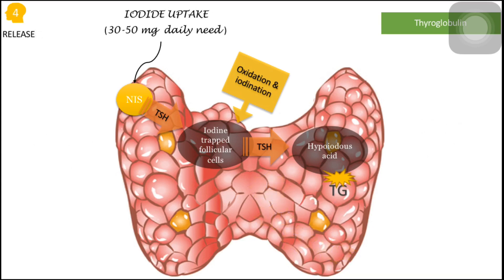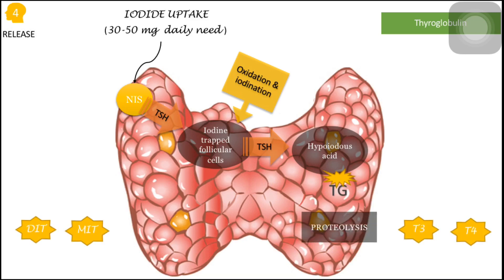The last step is release. After the proteolysis of this hormone from thyroglobulin, T3 and T4 are directly released into the bloodstream. Monoiodothyronine and diiodothyronine are deiodinated to form iodide, and this iodide is again reuptaken by the thyroid gland, and this cycle continues.